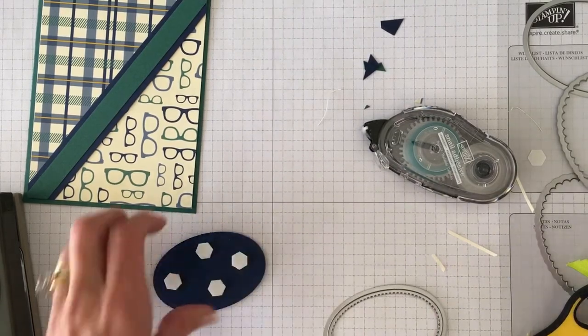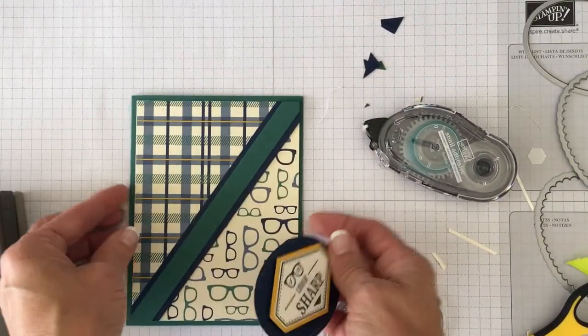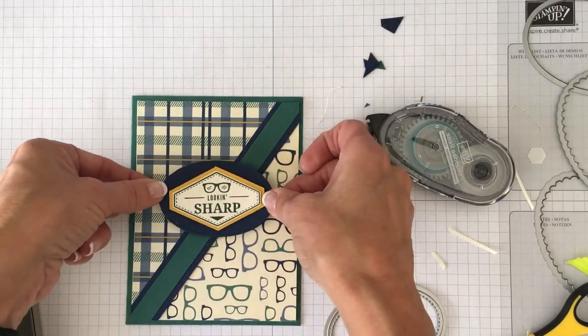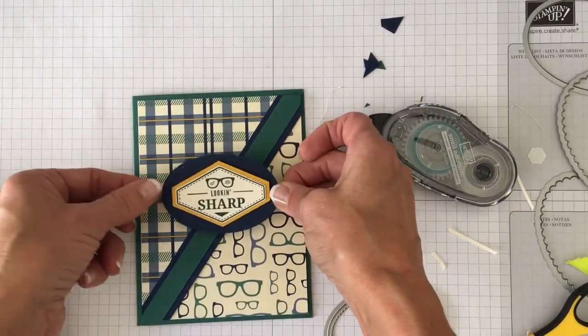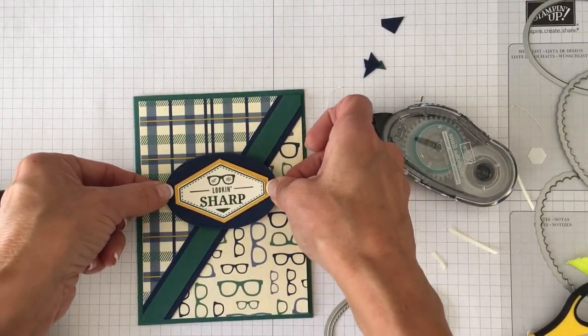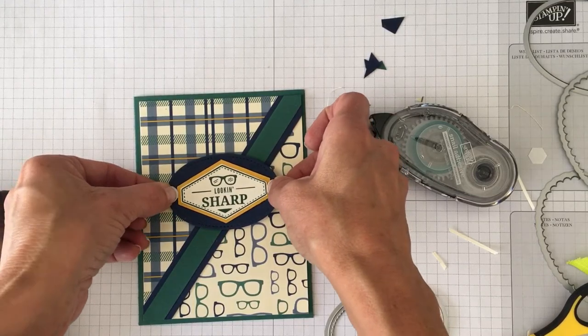So what I did is I just layered some more dimensionals. Just pop those little hexagons. One, two, three, four, five, six. Okay so then I just popped this right off the front of the card.